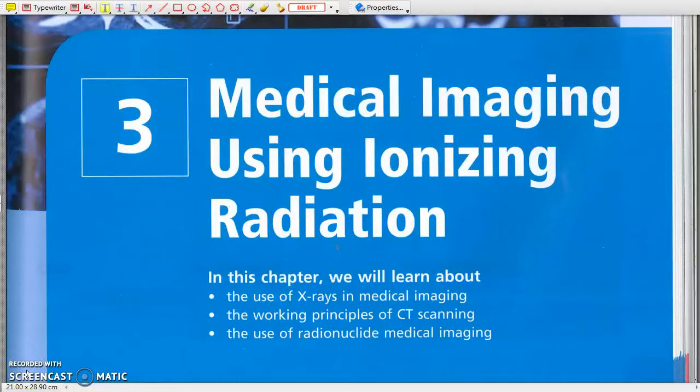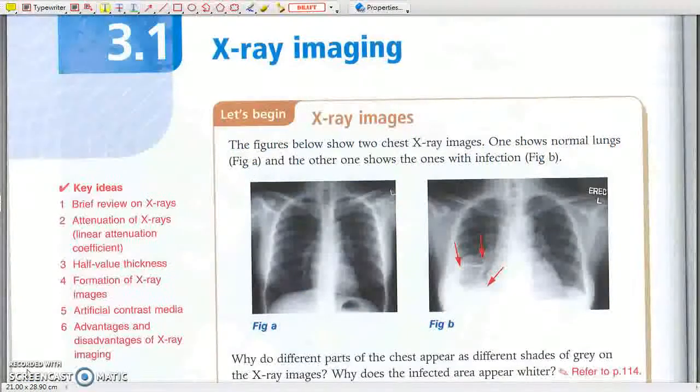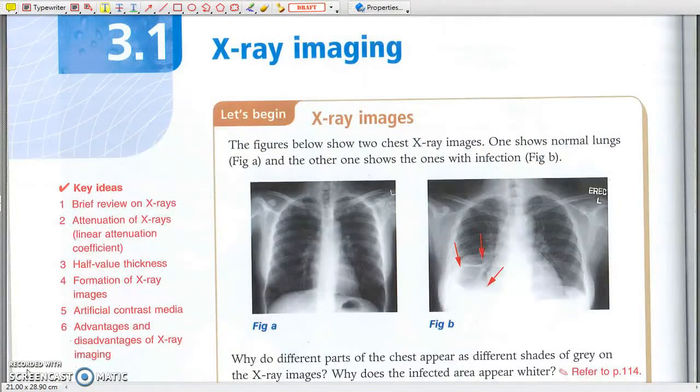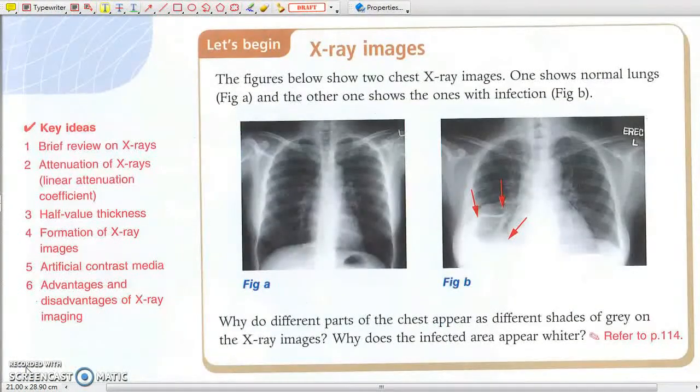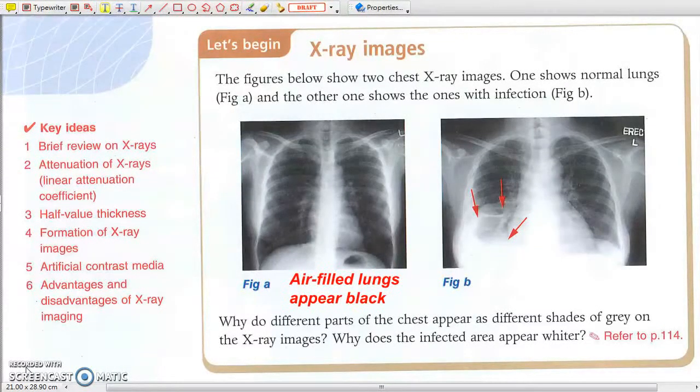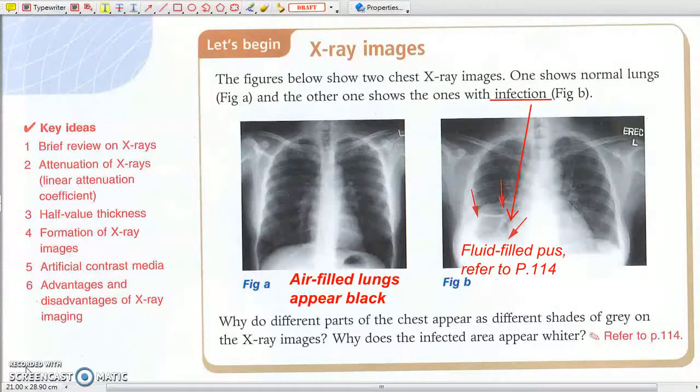Chapter 3: Medical Imaging Using Ionizing Radiation. Section 3.1: X-ray Imaging. X-rays are very penetrating. Nevertheless, attenuation of X-rays in bones is significant enough to produce enough contrast on an X-ray image so that different tissues appear as different shades of gray on X-ray images.